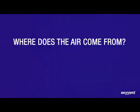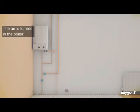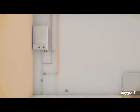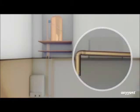Where does the air come from and how does it get in to your heating system? The air is formed in the boiler as part of the natural process of heating water. As the water is heated, micro air bubbles are formed in the boiler. These travel all along the pipes and accumulate in large pockets in the pipe work.